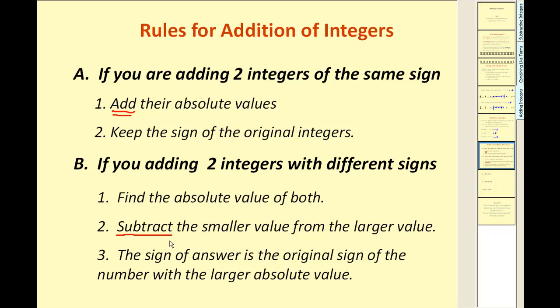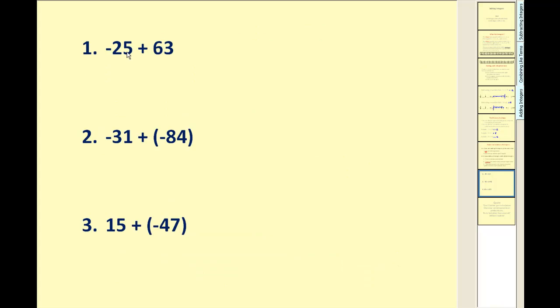Let's give it a try with the help of the money analogy. Negative twenty-five plus sixty-three. So we're down twenty-five dollars. But then we win sixty-three dollars. So we can probably realize that our sum will be positive. But since the original integers are different signs, we take the absolute value of both. Of course, the absolute value of negative twenty-five is twenty-five. But since there are different signs, we have to subtract. Again, we knew our sum had to be positive.